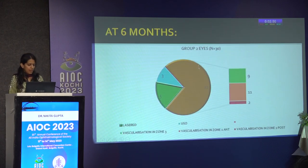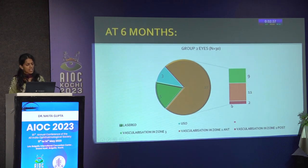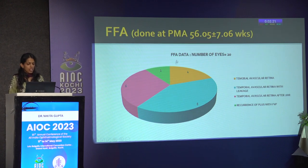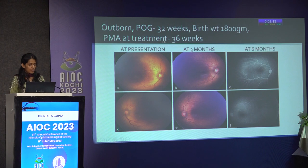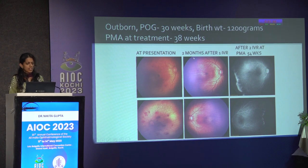Majority of eyes in both groups showed regression between 2 to 3 weeks following treatment. In the ranibizumab group, the postmenstrual age at time of recurrence was majorly at 39 to 41 weeks. At 6 months, in 22 ranibizumab-treated eyes that did not undergo laser or have unfavorable structural outcomes, less than 2 eyes had vascularization still limited to Zone 1. Angiography of 20 eyes in the ranibizumab group showed 6 eyes still had temporal avascular retina, 8 eyes had temporal avascular retina with leakage, and 4 eyes had temporal avascular retina without leakage, even after receiving 2 intravitreal ranibizumab injections.